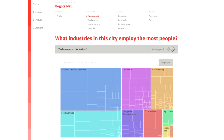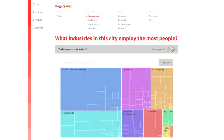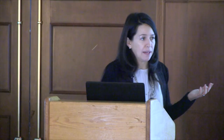We can answer questions we were never able to address in the international atlas — like what industries in Bogota employ the most people in the city, and what kinds of industries or products does this city export. We can also look at the product space at the city and municipal level. In the case of Bogota, you can see it has clusters in low-complexity industries such as vegetables, textiles, and printed goods, as well as more complex industries such as machinery, vehicles, and chemicals.